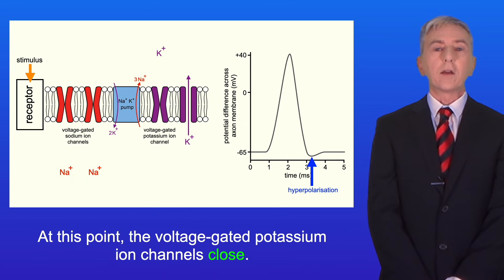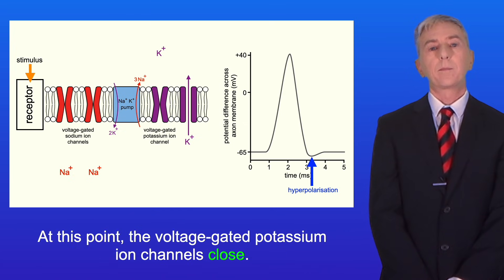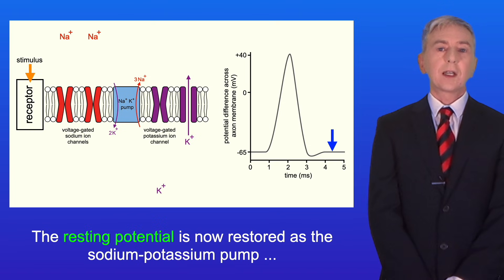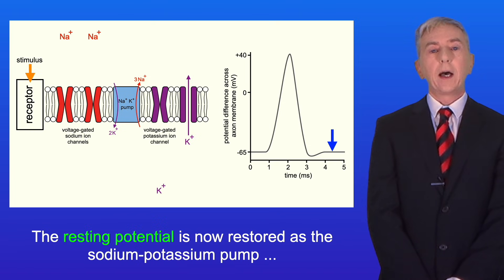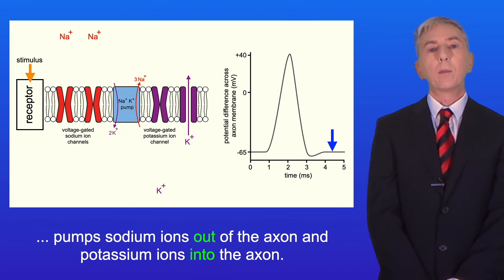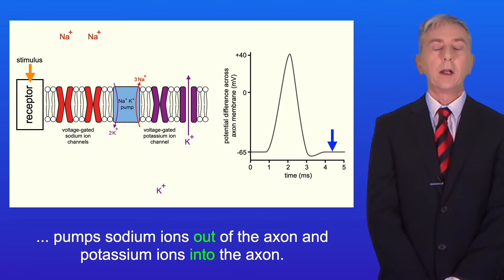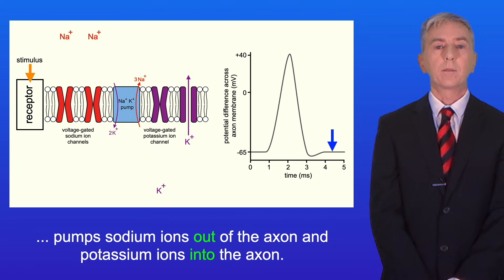This is called hyperpolarization. At this point the voltage-gated potassium ion channels close. The resting potential is then restored as the sodium-potassium pump pumps sodium ions out of the axon and potassium ions into the axon.